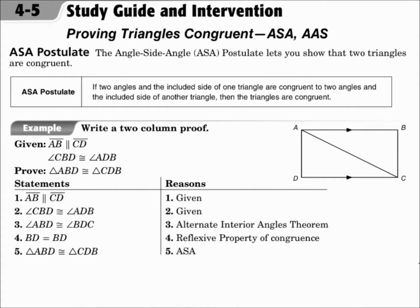This is Lesson 4.5, Proving Triangles Congruent, ASA and AAS. Your objectives are to use the ASA postulate to test congruence and to use the AAS theorem to test for congruence. These proofs are done the same way as the proofs with SSS and SAS, just with a different order.